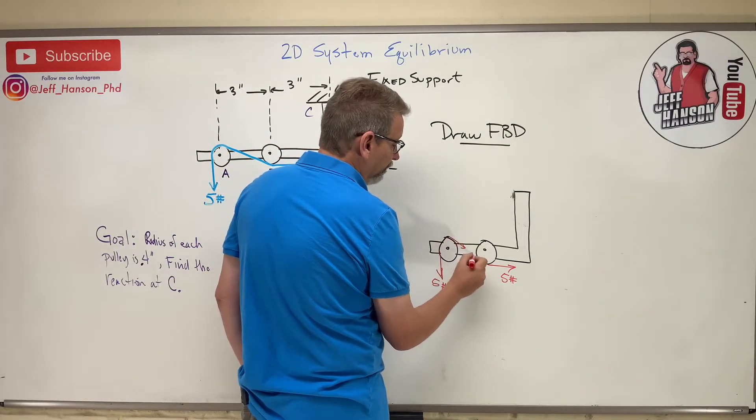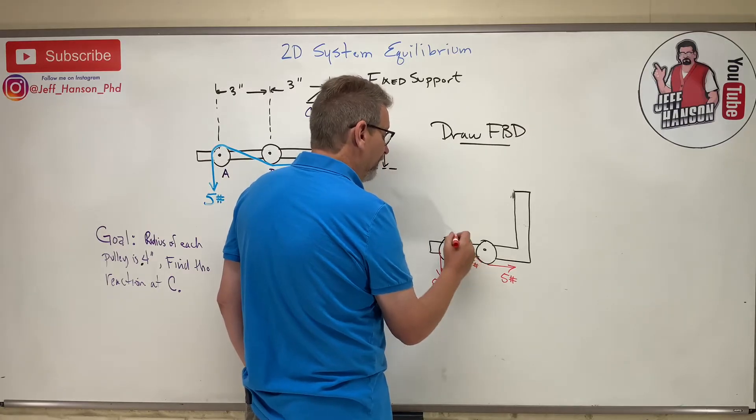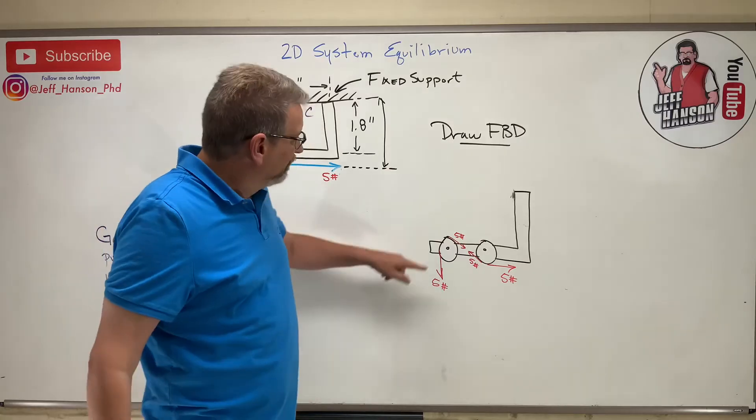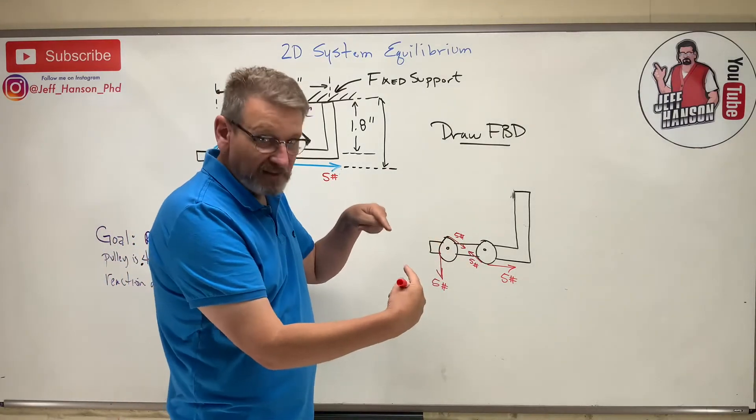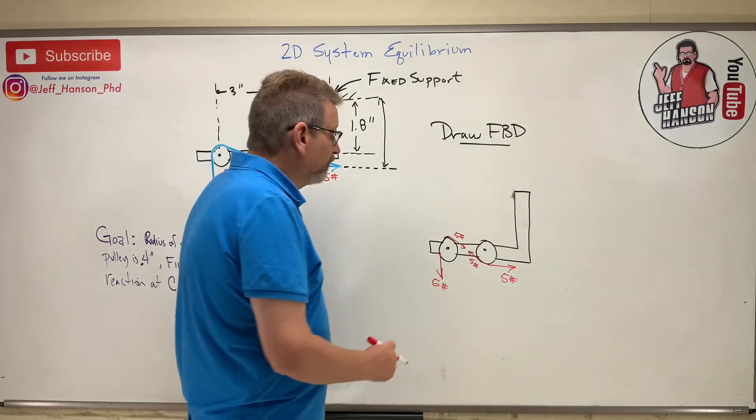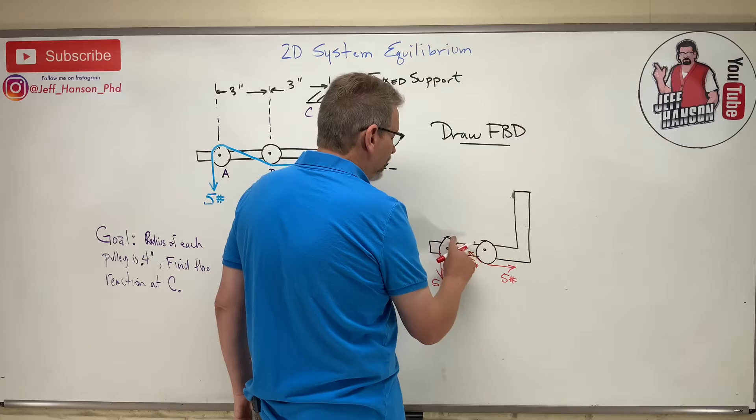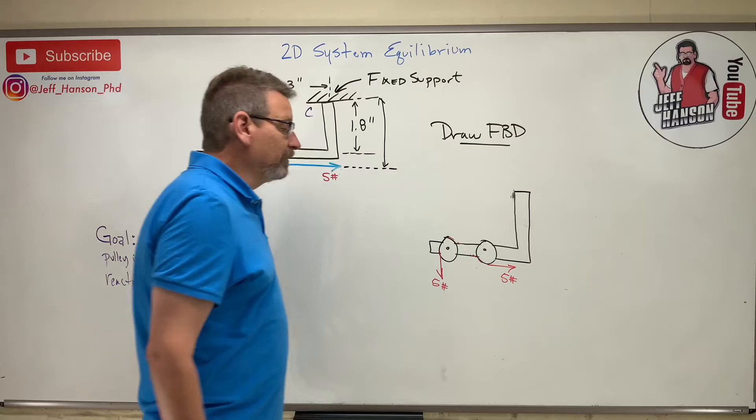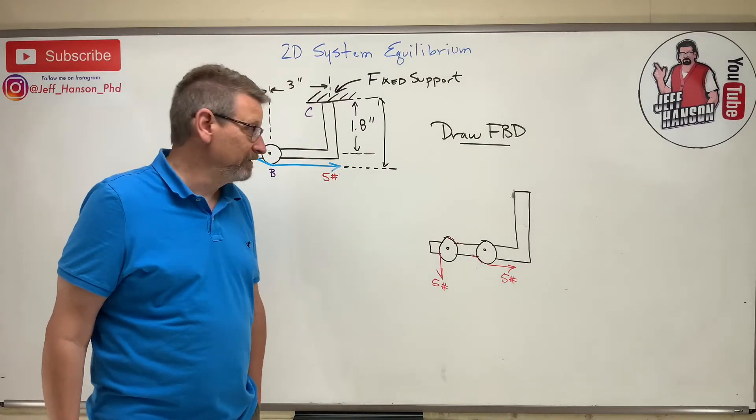Now some of you may have done this - you may have cut the rope there as well and had that. That's still correct, but what does this 5 pounds and that 5 pounds do? They cancel each other out, right? So this might as well not even be there. That's why I leave it off. I mean you can put it there if you want, it's not incorrect, but it just causes you an extra step in your equations that's not necessary to be there.